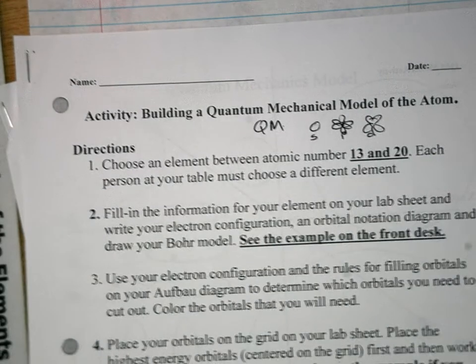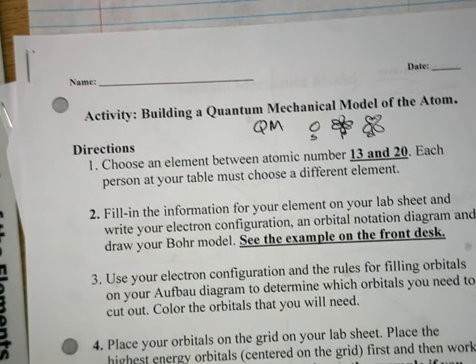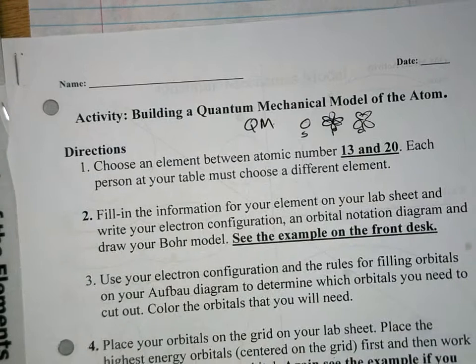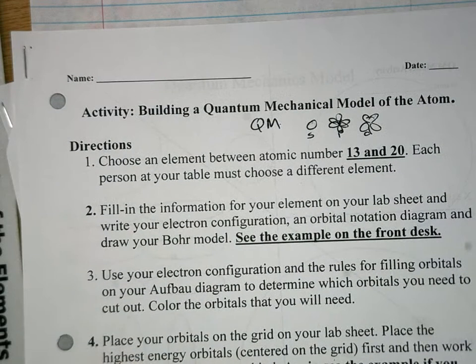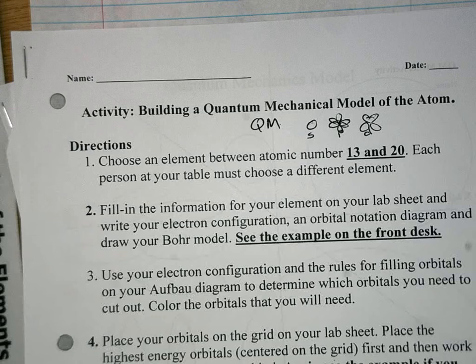First off, you have to pick an element between 13 and 20 on the periodic table. Do this by group - pick an element that nobody else in your group is doing.